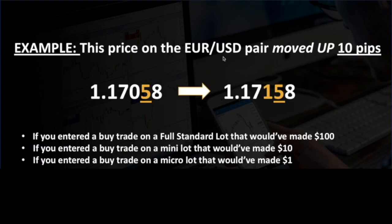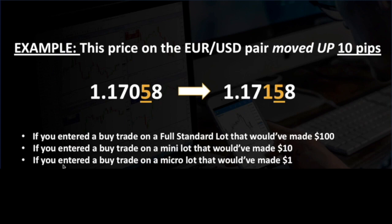Here's an example: the EUR/USD price moved up 10 pips — from 1.17058 to 1.17158. That's 10 pips in profit. If you entered a buy trade on a full standard lot, that would have made you $100, not including spreads. On a mini lot that would be $10, and on a micro lot that would be $1. Huge difference depending on your account size.